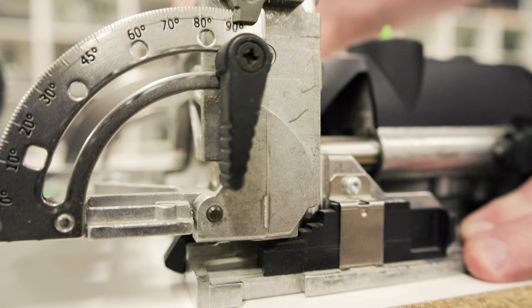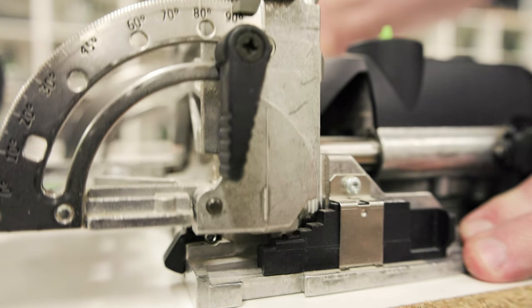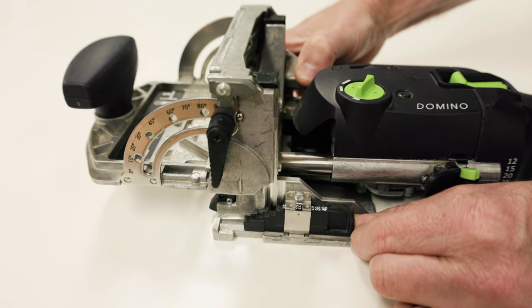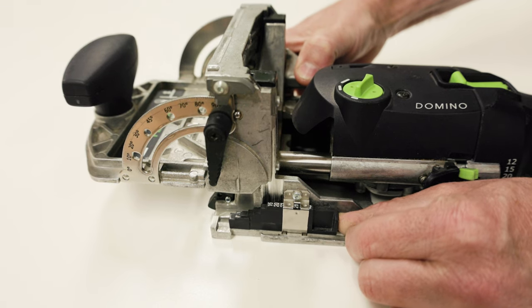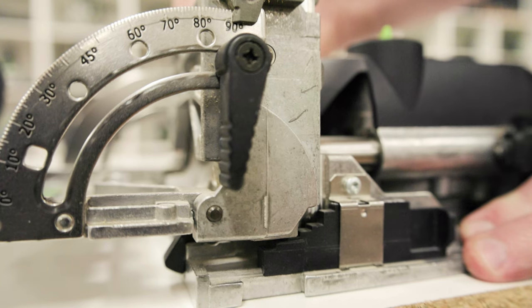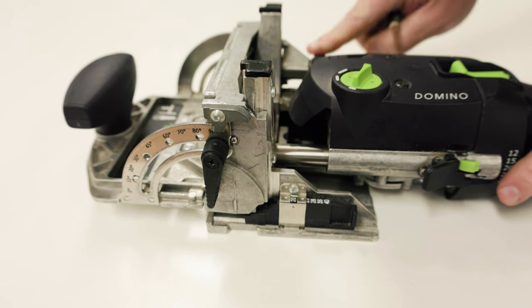To use the board thickness setting, raise the fence so it clears the gauge. Slide the gauge in or out until the thickness of the workpiece is shown in the window. Lower the fence down until it touches the gauge, then tighten the locking lever.